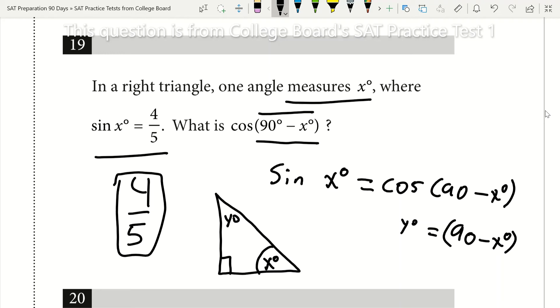So now when we do that, if we're going to plot that 4 fifths, we know that the sine is the opposite over the hypotenuse. So our opposite of angle x would be 4, and our hypotenuse would be 5.